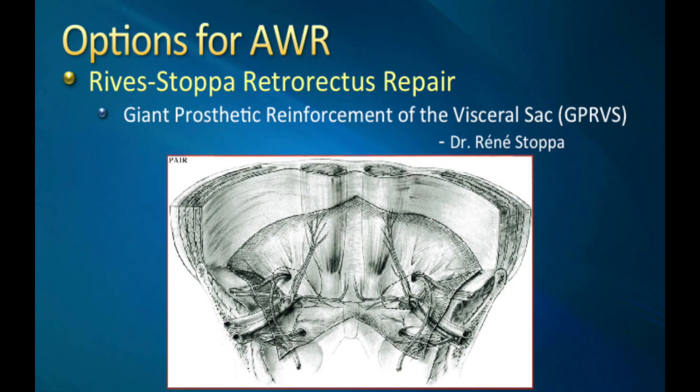We can't have a good discussion about abdominal wall reconstruction without first talking about some classic repairs, such as retrorectus repair. Rives and Stoppa developed this technique, originally started for bilateral inguinal hernias, and then later developed it for more ventral hernias. It's a wonderful procedure that can provide a lot of benefit for patients.